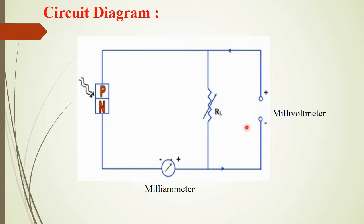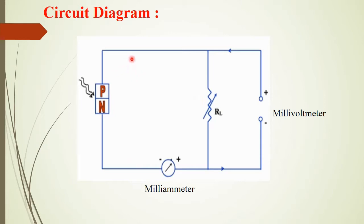Initially, we will determine the short-circuit current and open-circuit voltage — two important parameters of the solar cell. Short-circuit current is defined as the current produced by the solar cell when the load impedance is minimum compared to the cell impedance. To determine it, we will keep the load resistor equal to zero ohms and then determine the short-circuit current. All the current produced by the solar cell will pass through the milliammeter, which will show the maximum current. Since the load resistor is zero, the voltage across the load resistor will also remain zero. So short-circuit current is the maximum current and at that time the voltage across the solar cell is zero.